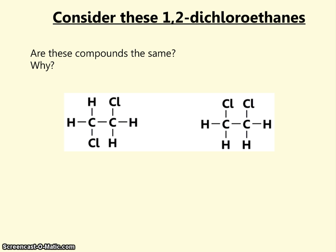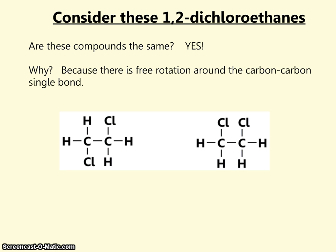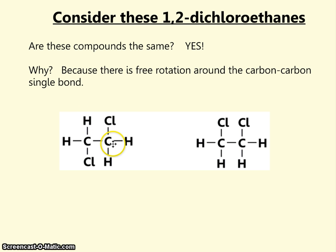First of all, let's consider these 1,2-dichloroethanes. Are these two compounds the same? The answer is that both of these molecules are identical — they are the same. The reason is because there is free rotation around the carbon-carbon single bond. You could imagine rotating this carbon so that the chlorine came out towards you and then back into the plane of the paper, and the chlorines and hydrogens would look identical to the other molecule. This is really where having your own model kit would be beneficial.